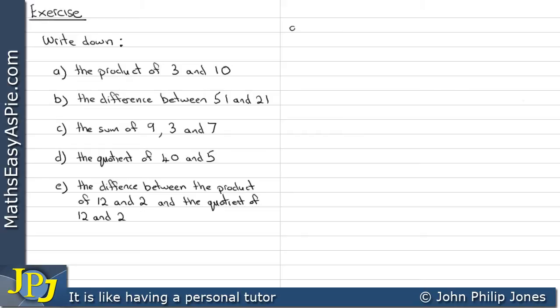If we have a look at A, it's asking us to find the product of 3 and 10. And quite simply, all we do here, we take the 3 and we multiply it by the 10 to give 30. So the answer to A is simply 30, 3 times 10. The product means multiply.